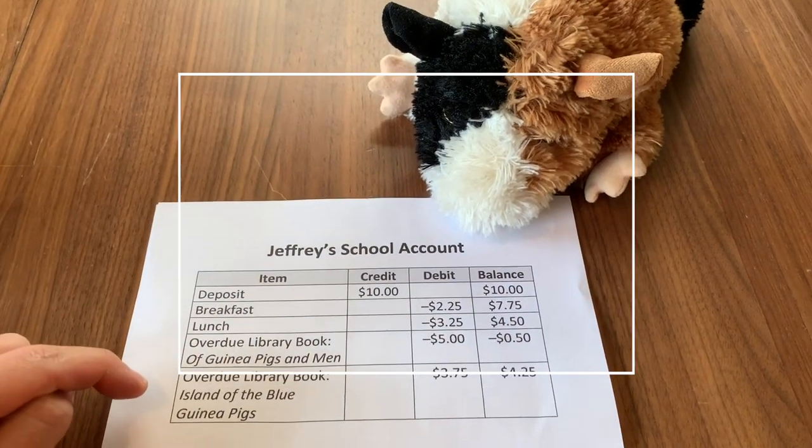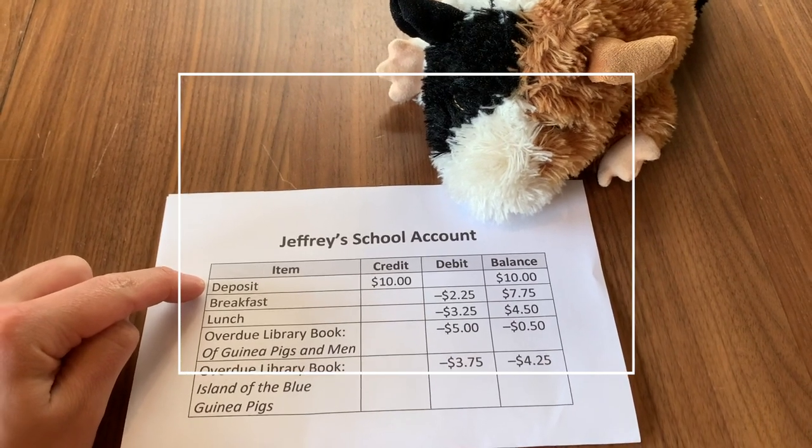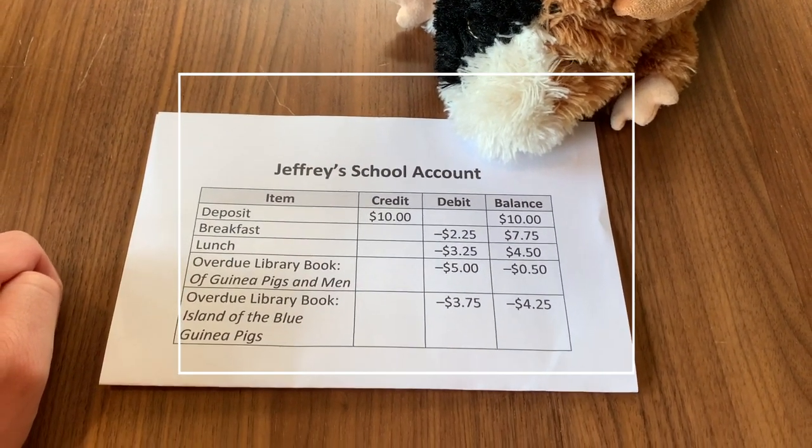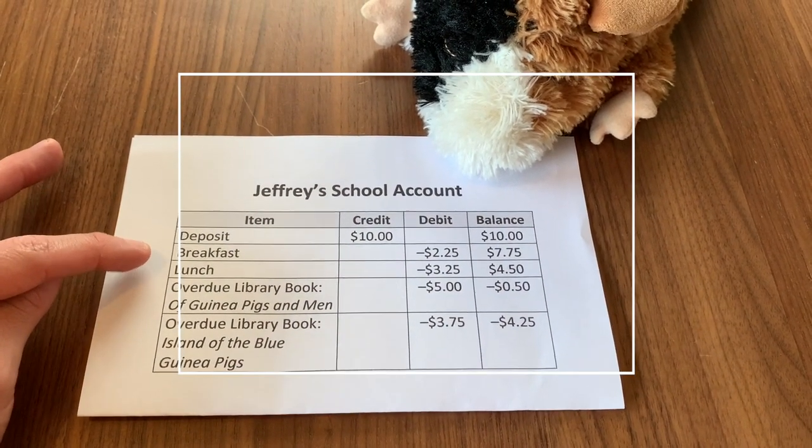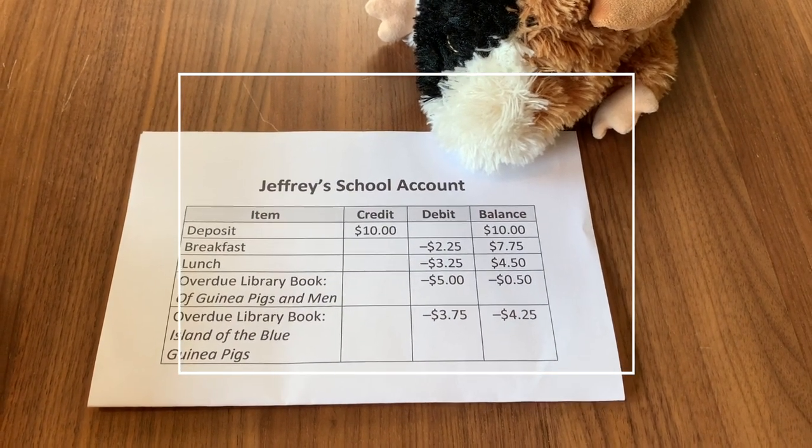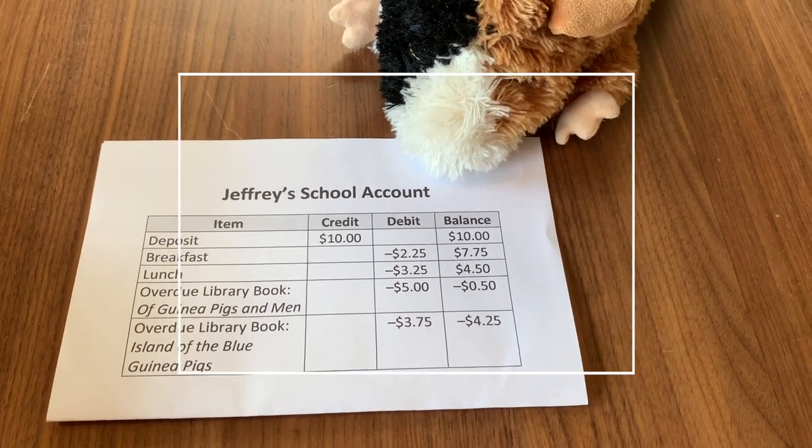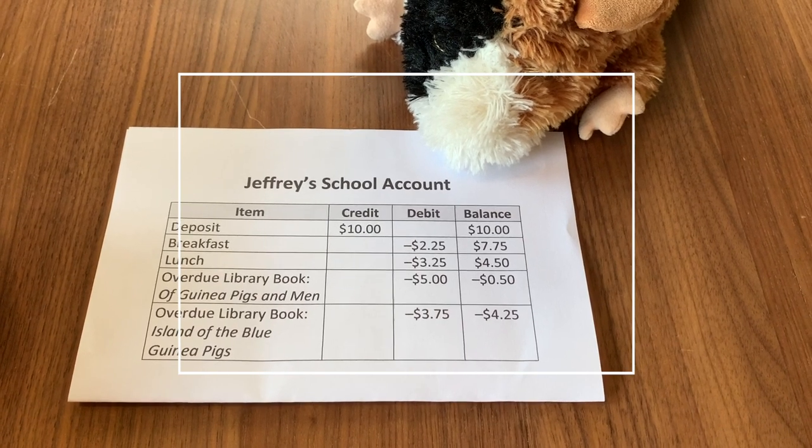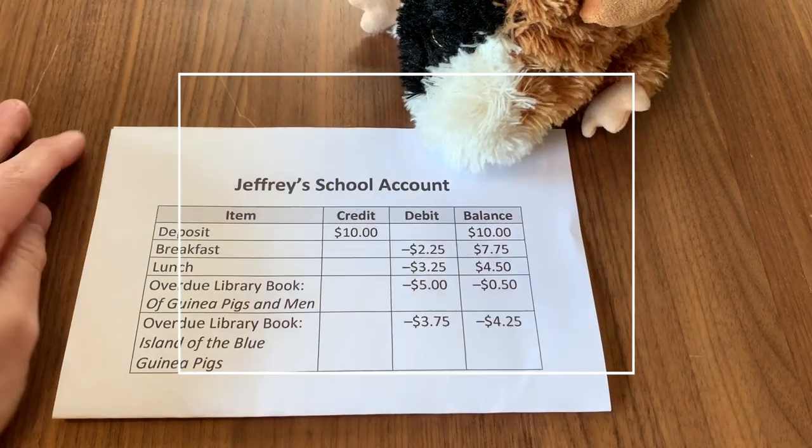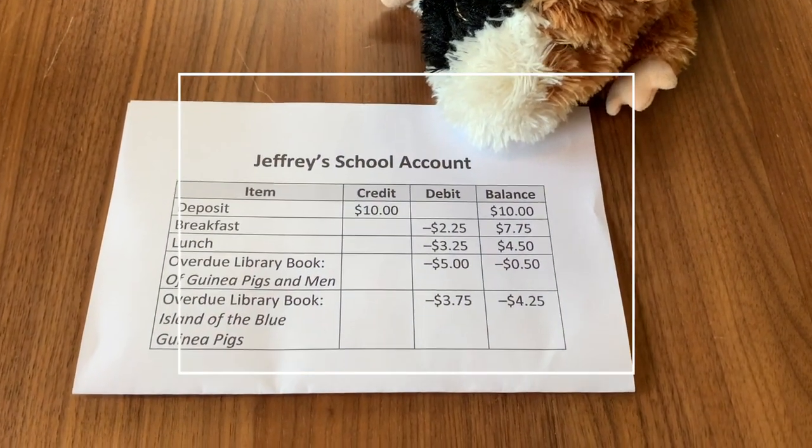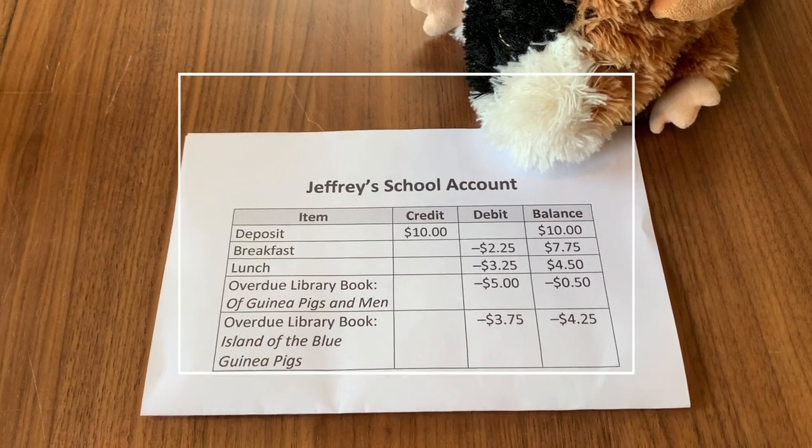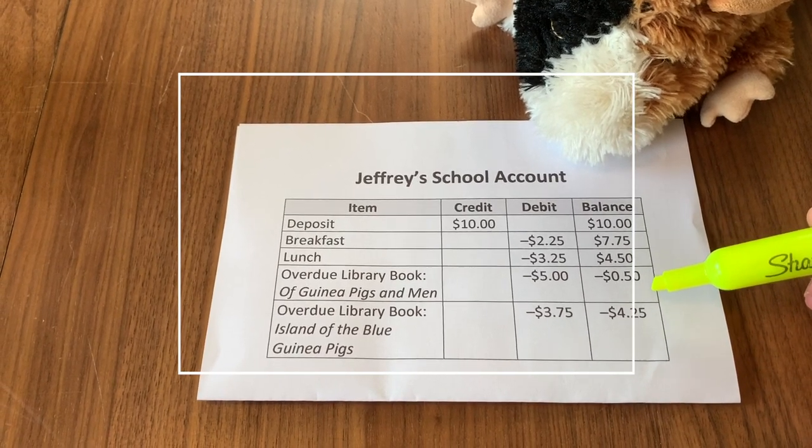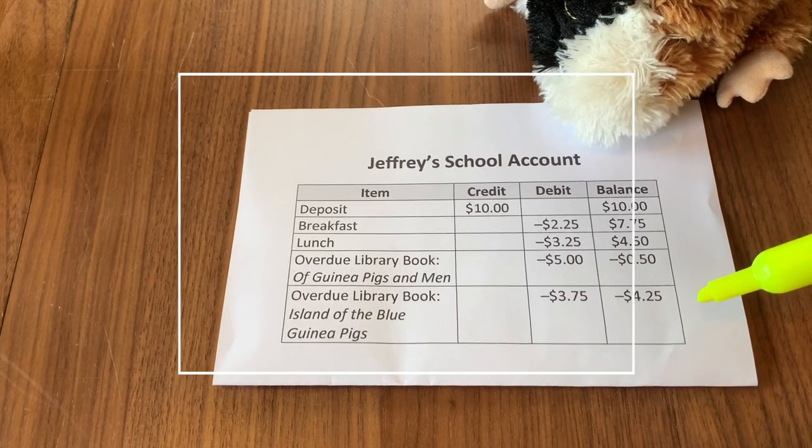You'll see in the first column, we have the different items. Now, you might not be sure what a deposit is. That's just when you add money into your account. That's why that $10 is a credit. A credit is money going into your account. That's the money that you can use to purchase things you need. For Jeffrey, those are things like his breakfast and his lunch. And unfortunately, he also has some overdue library books of guinea pigs and men and Island of the Blue Guinea Pigs. You can see all of those items come out as debits. Debits are amount that are coming out of your account. Why do you think that they're negative? That's right. It's because if it's money going out of your account, it's going to make your account total go down. What is your account total, you might ask? Well, we call that a balance. That's why Jeffrey started with $10 after his deposit, but then his balance kept going down and down and down, and now his balance is actually negative.